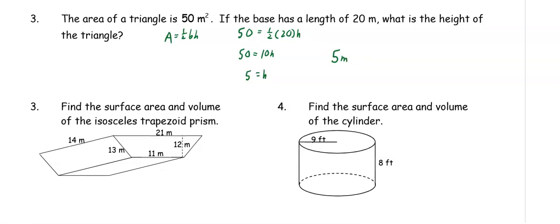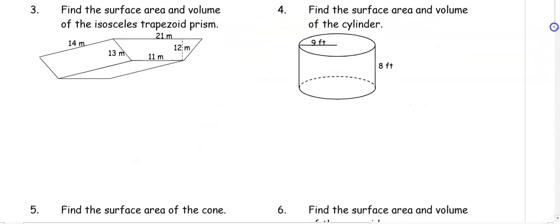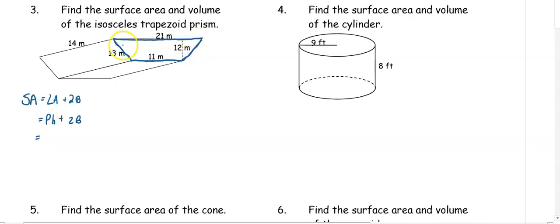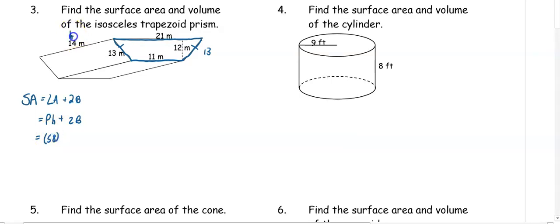In number four, we want to find the surface area and the volume of an isosceles trapezoid prism. To find the surface area, it is the lateral area plus the area of two bases. The lateral area is perimeter times height plus the area of two bases. Since our base is an isosceles trapezoid, the legs are both 13. So our perimeter is 21 plus 13 plus 11 plus 13, and we get a perimeter of 58. The height is going to be 14, plus the area of two bases.